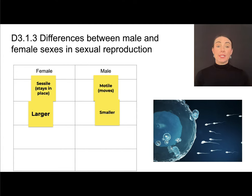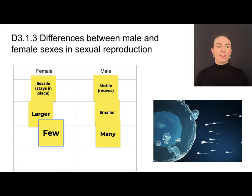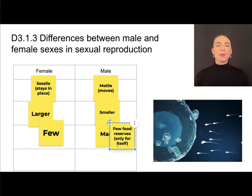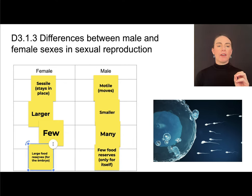The male gamete is really just needed for its chromosomes. In terms of their number, there tend to be many male gametes whereas there tend to be few female gametes. In terms of food reserves, this has to do with what parts will remain in the embryo or zygote. Male gametes tend to have very few food reserves — only enough for themselves — but the female gamete will have a large food reserve, like a yolk, for the embryo as it is growing.